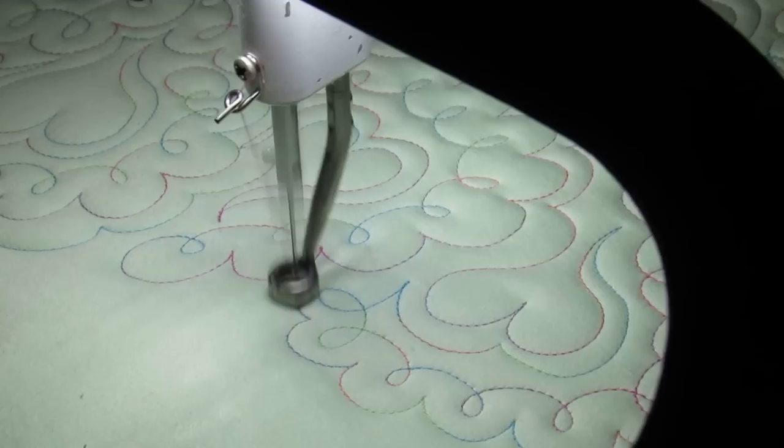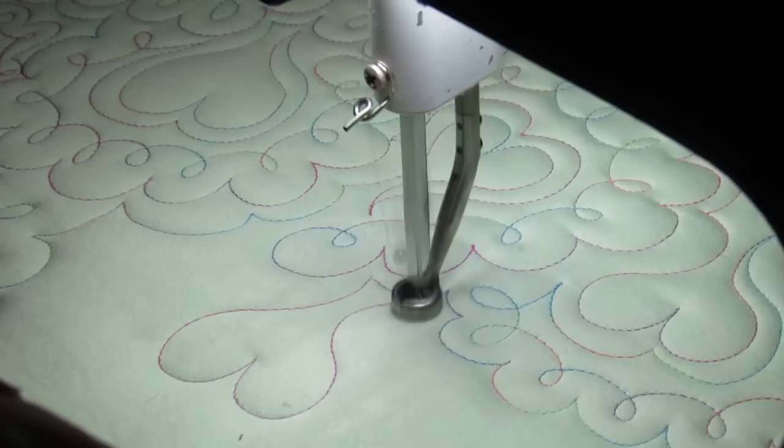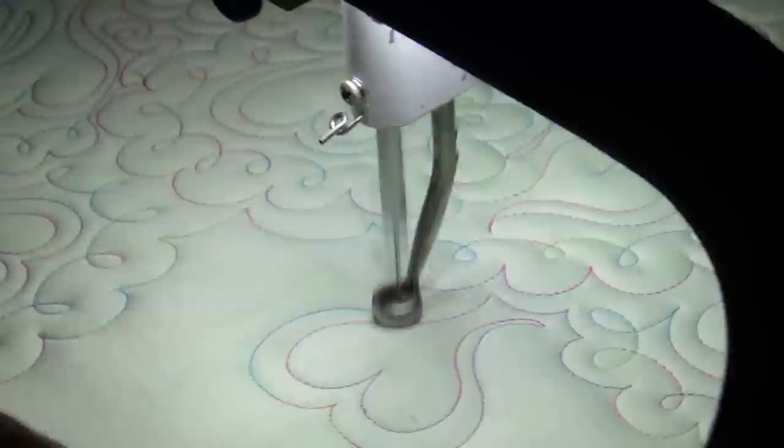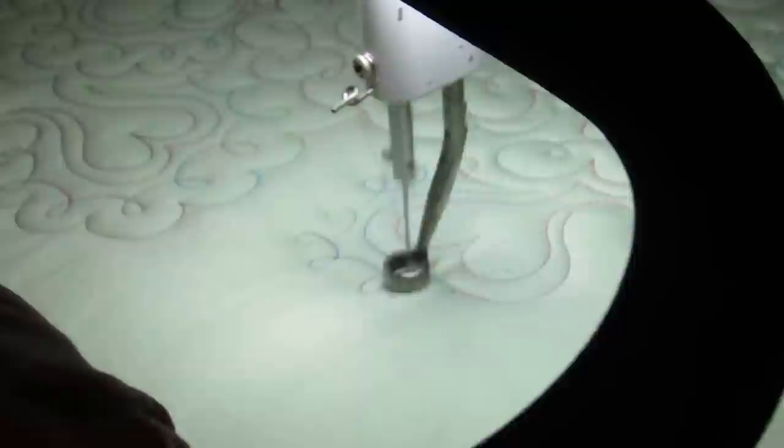If you practice without your stitch regulator, you're going to be a better freehand quilter. It forces you to move smoothly. If you don't, you'll either get stitches that are too close together or toe snaggers. There's consequences for not moving smoothly when you don't use your stitch regulator, which helps train you to move properly.